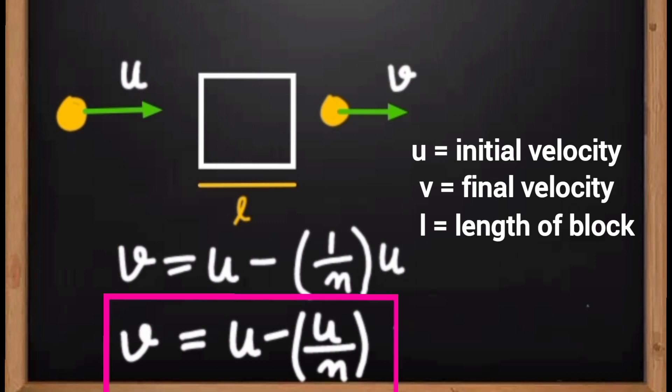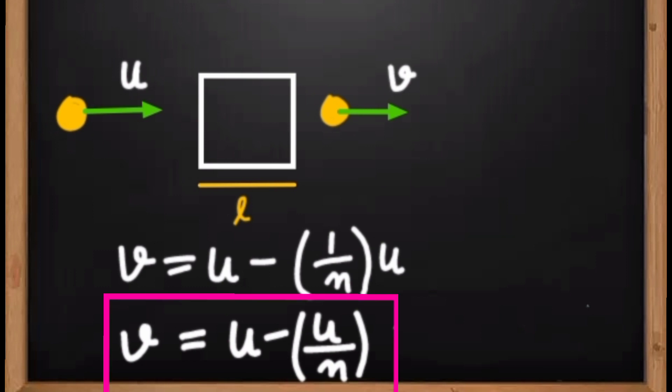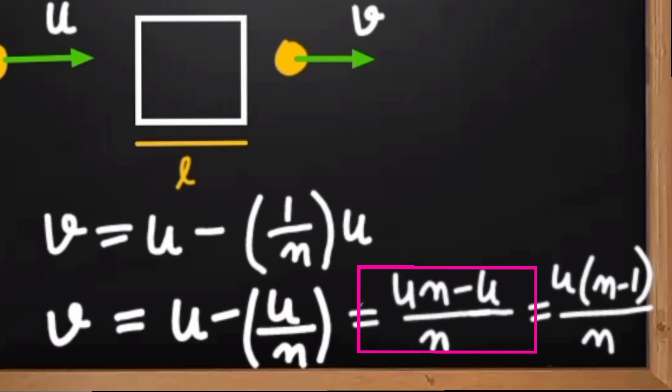After taking LCM, we can write it as v = u(n-1)/n, as you can see on the screen.